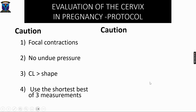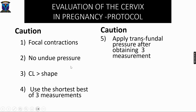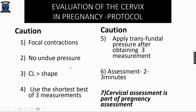There is a separate video covering pitfalls in cervical assessment, so we won't go into full detail here. A very common pitfall: undue probe pressure by the transvaginal probe leads to echogenicity of the cervix and cervical elongation. It is important to note that cervical length is more important than the shape of the cervix. Use the shortest of three measurements, apply transparietal pressure after obtaining three measurements, and the assessment should take no more than two to three minutes. Cervical assessment is now part of routine pregnancy assessment.